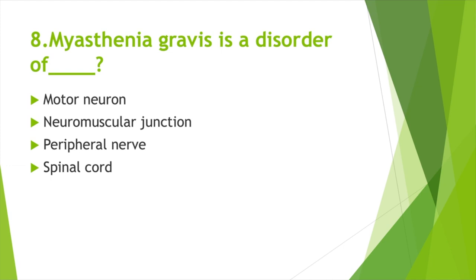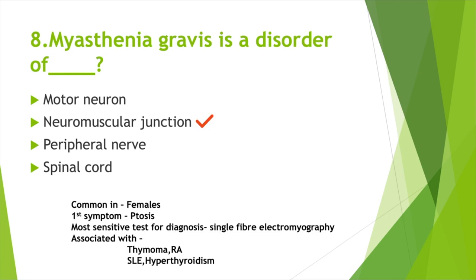Myasthenia gravis is a disorder of — Option A: Motor neuron, Option B: Neuromuscular junction, Option C: Peripheral nerve, Option D: Spinal cord. Answer: Option B, Neuromuscular junction. This disease is common in females; first symptom is ptosis. Most sensitive test for diagnosis: single-fiber electromyography. Associated with thymoma, rheumatoid arthritis, SLE, and hyperthyroidism.